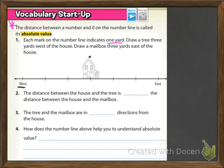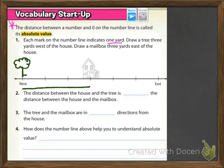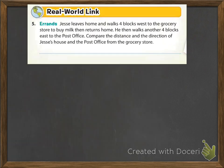Number one says each mark on the number line indicates one yard. Draw a tree three yards west of the house. So we hop one, two, and three yards — that's three yards shown with the green line. Then you draw a tree. Remember, we had to start at the house, and in this example the house is going to be zero. So there's the tree drawn at negative three on the number line.